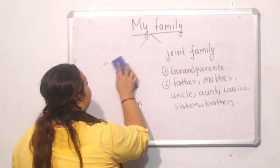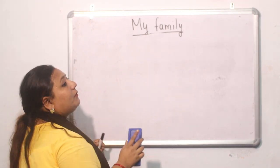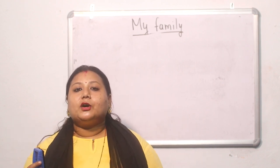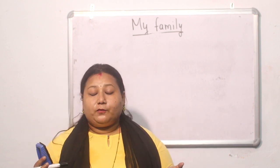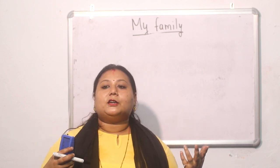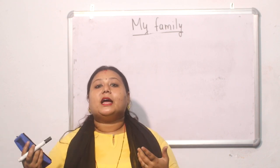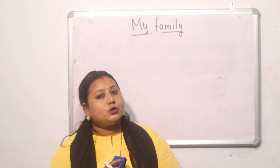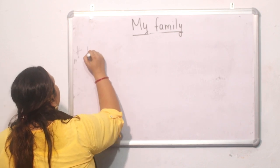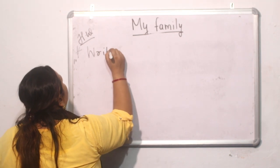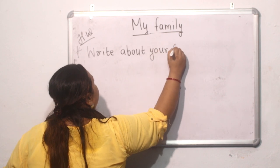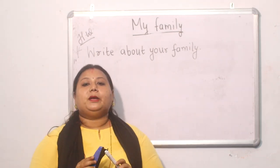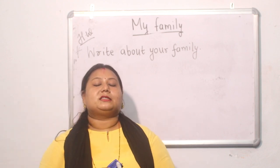So students, today I am going to give you a home assignment to write about your family — how many members are there in your family, who are they, and what do they do. For example, if there are four members in my family: my father's name is Ram Kumar Thapa and he is an officer. Likewise, you have to write about your family. Please note this in your copy and do your work. We will continue our next class next day. Thank you.